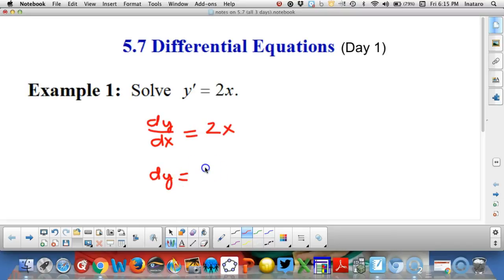We'll multiply both sides by dx and now I need to undo taking the derivative. The way we undo taking the derivative is to take the integral or antiderivative of both sides.